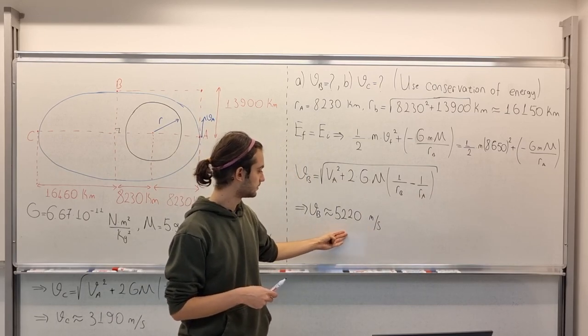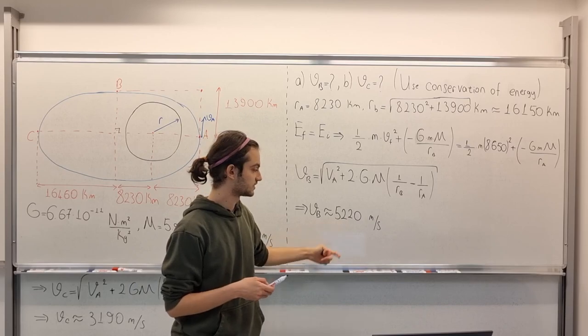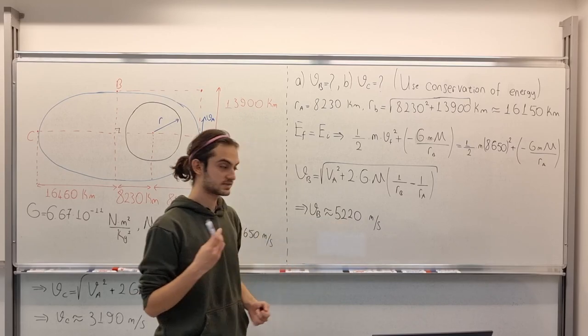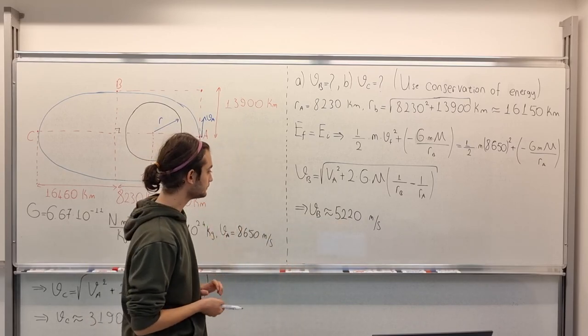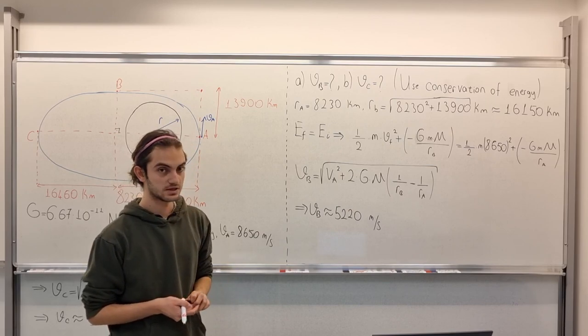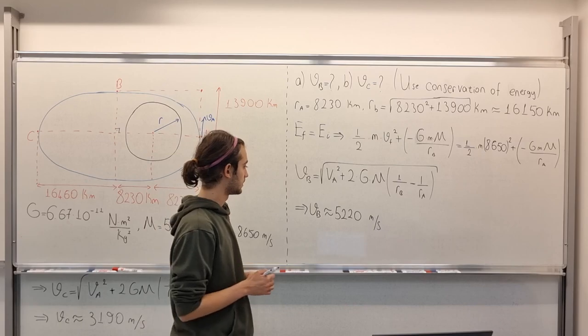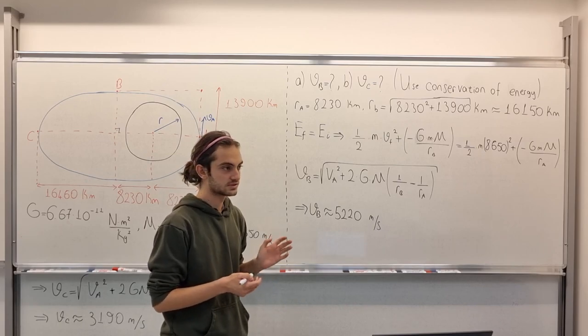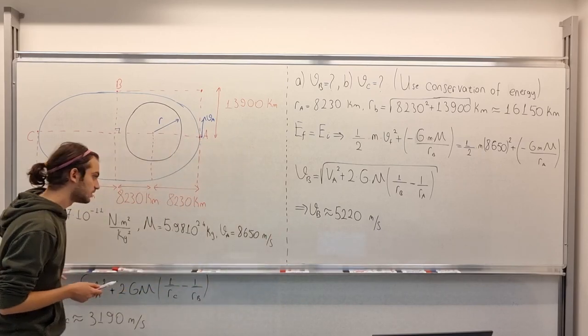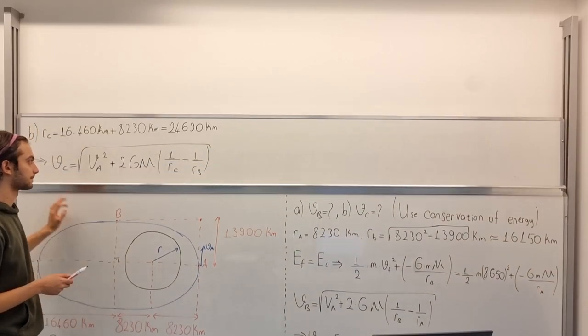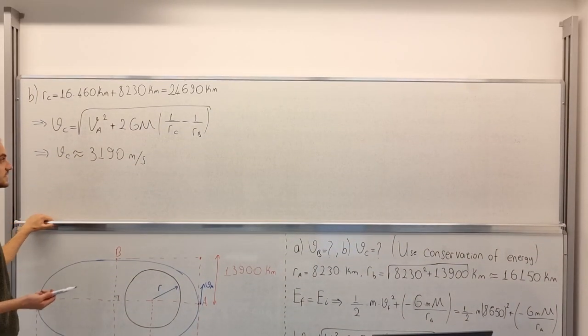Then, you get this number, which is the speed of the satellite at B. So, in option B, we need to find exactly the same, but at point C. So, following the same steps,